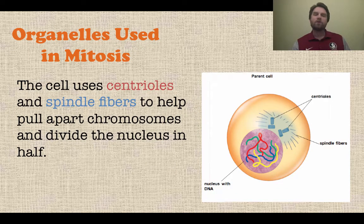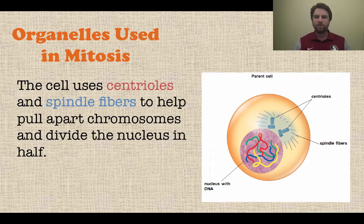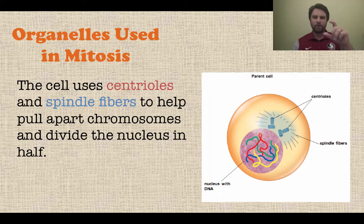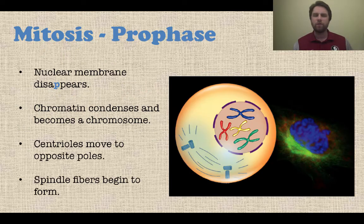So what organelles are used in mitosis? This is really important. We have a couple of organelles: centrioles and spindle fibers. The centrioles are the cylindrical objects labeled on the right, and spindle fibers look like fibers. What they help to do is pull apart the chromosomes and divide the nucleus in half. So pay attention to what they do.